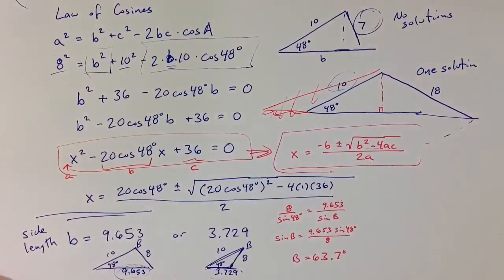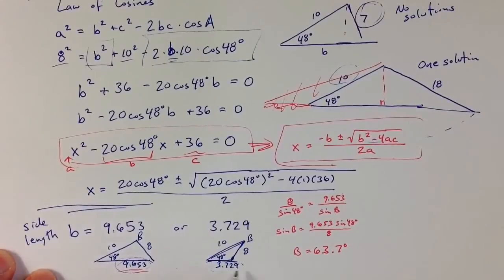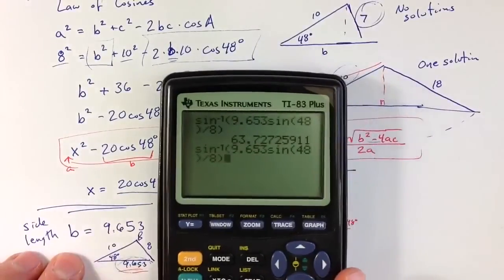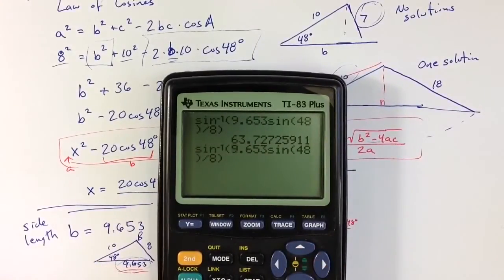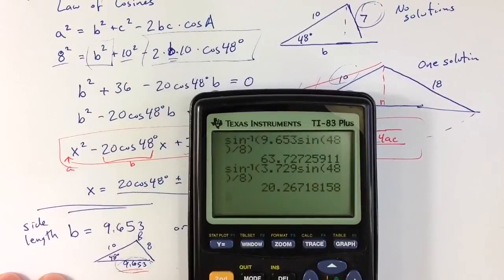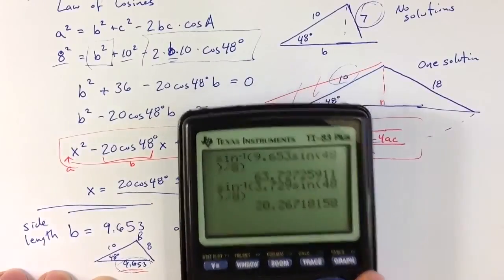So that's for the first solution with a side length of 9.653. For the second solution, we're going to get a similar equation, but instead of 9.653, we have 3.729. So that other possible solution, I simply want to change this to 3.729. The other values stay the same. And so the second possibility for the angle—and it is a smaller angle, which makes sense, it should be a smaller angle—is roughly 20.3 degrees.